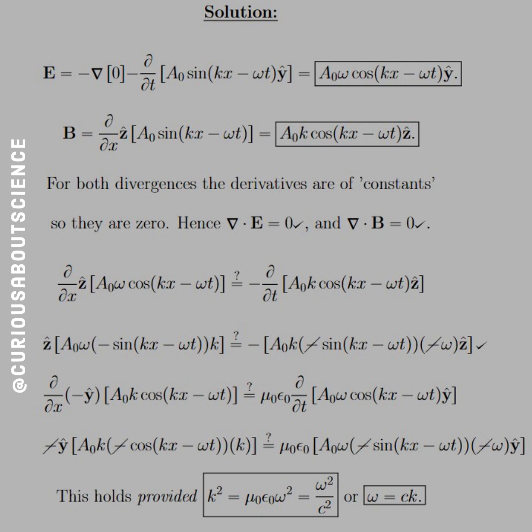But, we need to provide the statement that k squared equal mu naught epsilon naught omega squared, which is equal to omega squared over c squared. Or, from chapter 9, what we saw was that omega was equal to ck, where k was the wave number.